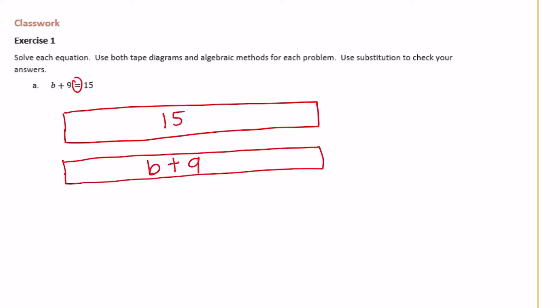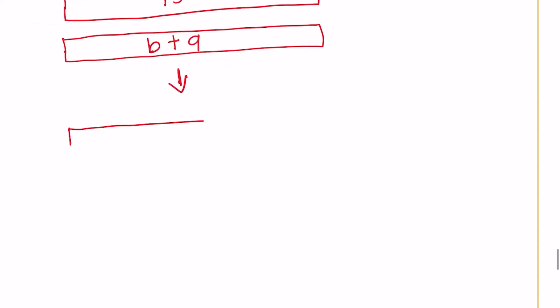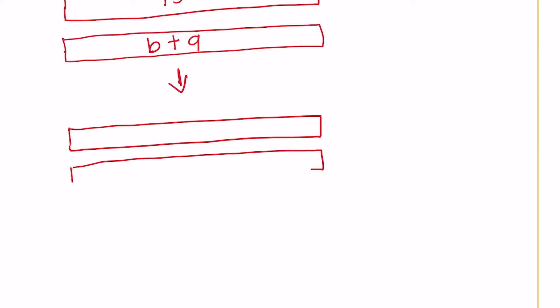Now I'm going to take it a little bit further and draw two more tape diagrams. Again, these are equal. So we have 15 equal to — this time I'm going to separate it into b and 9. So we have two parts, b and 9, but these two tape diagrams are both equal to 15.